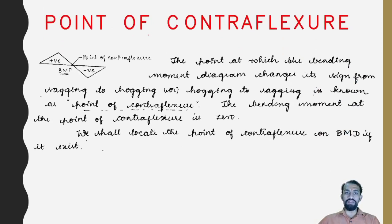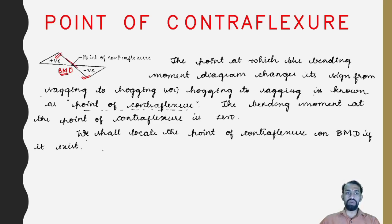Moving on to the point of contraflexion, also known as the point of inflection. In the bending moment diagram, when the positive value of bending moment changes to a negative bending moment — when there is a variation from positive to negative — the point where it coincides with the neutral axis is considered the point of contraflexion.